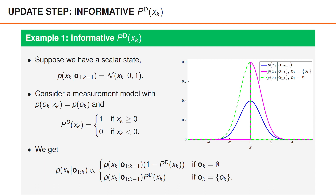To conclude this example, I would like to point out two things. First, this example demonstrates that the probability of detection can be informative and that it cannot always be ignored. Second, it is important to note that this is a toy example specifically designed to illustrate that p_D(x_k) may be important, and in most situations the measurement vector o_k is far more informative than the probability of detection.